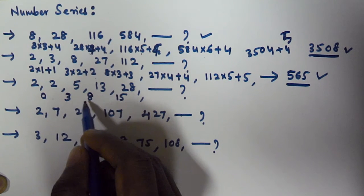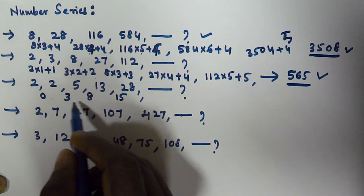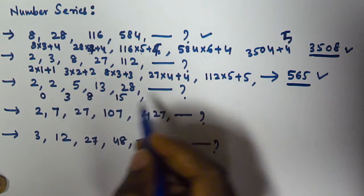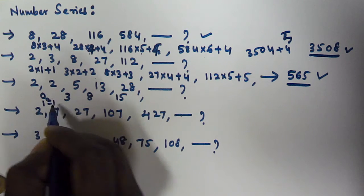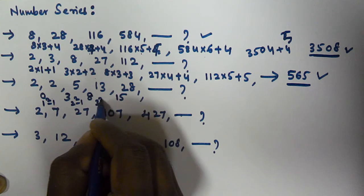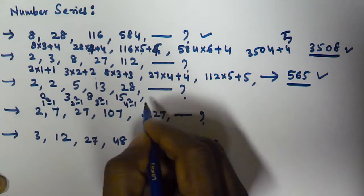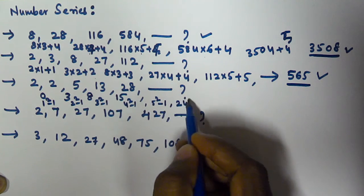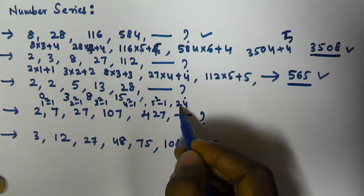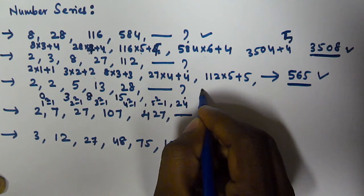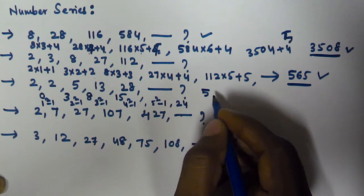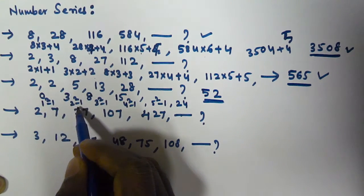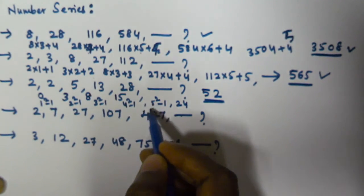These differences are close to squares of numbers: 0 is 1² minus 1, 3 is 2² minus 1, 8 is 3² minus 1, 15 is 4² minus 1. So the next difference should be 5² minus 1, which is 24. Adding 24 to 28: 28 plus 24 equals 52. The next number in this series is 52.